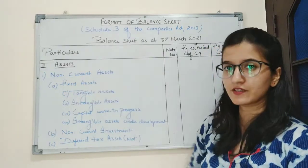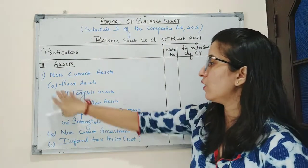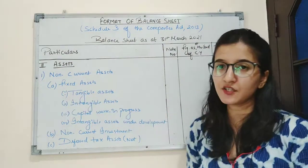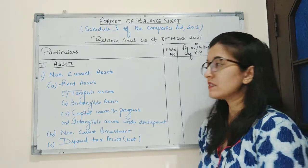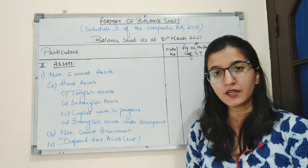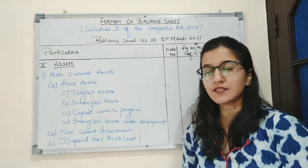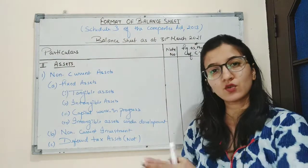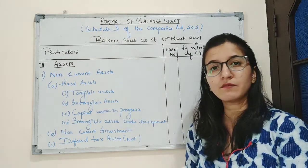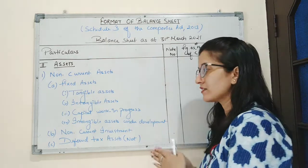The first sub-part is fixed assets, and under fixed assets there are four sub-parts. The first is tangible assets — tangible assets means those assets which can be seen or touched, for example machinery and buildings. Second is intangible assets — intangible assets means those assets which cannot be seen or touched but whose presence can be felt, for example goodwill, patents, and trademarks.